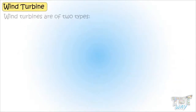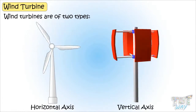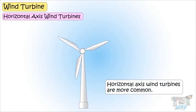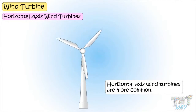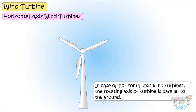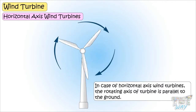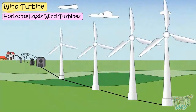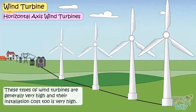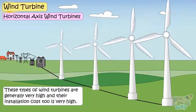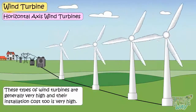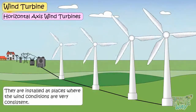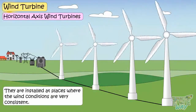Wind turbines are mainly of two types. In the case of horizontal axis wind turbines, the rotating axis of the turbine is parallel to the ground. They are mainly used in commercial, large-scale projects, producing electricity at a large scale. This type of wind turbine is generally very high, and their installation cost is also very high. They are installed at places where the wind conditions are very consistent.